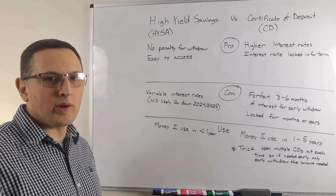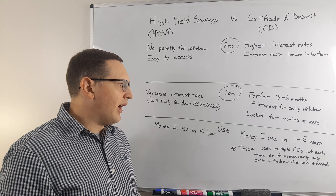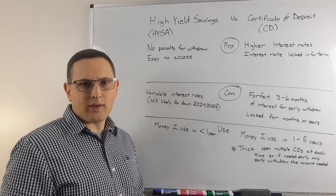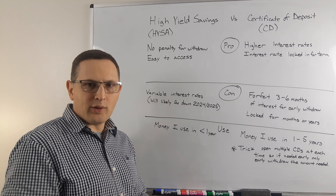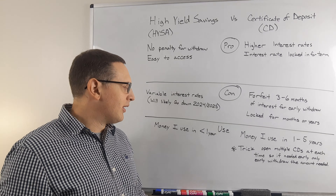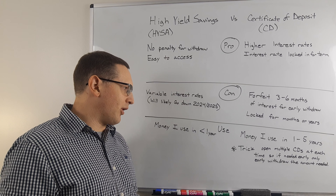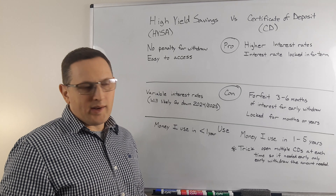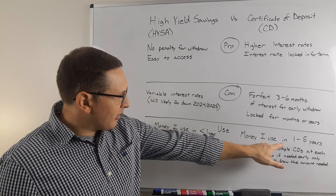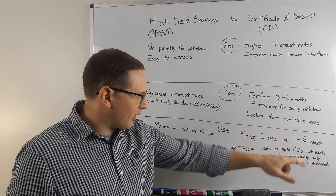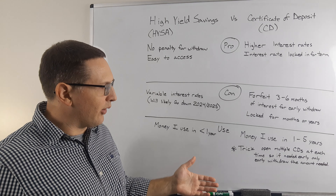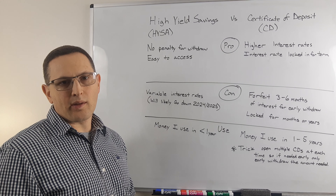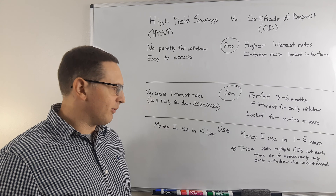I generally focus on the one to two year range. I'm not looking to use any of this money. As I get closer to retirement, I'm going to start going out to five years, but for right now I generally have CDs around a year out.